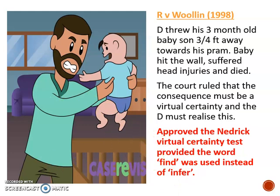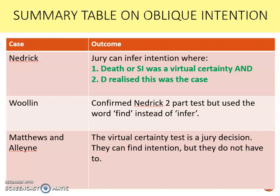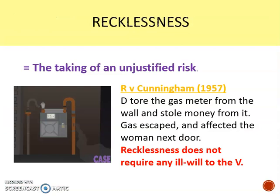The final case on oblique intent is Matthews and Alleyne, where the defendants threw a victim from a bridge into the River Ouse, even though the victim was screaming that he couldn't swim. The jury were given the Nedrick test for oblique intent, and the principle confirmed is that it is always up to the jury to decide whether the defendant realized that death or serious injury was a virtual certainty. The three key cases for oblique intent are Nedrick, Woollin, and Matthews and Alleyne.